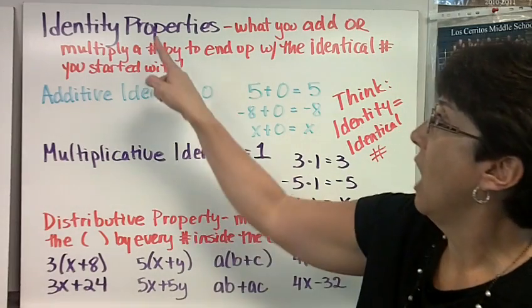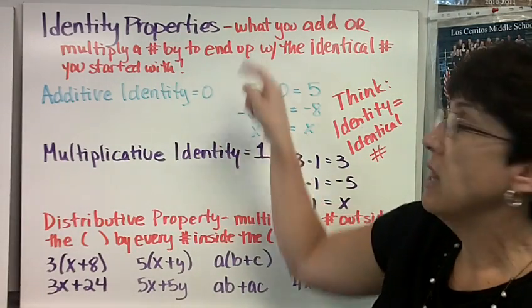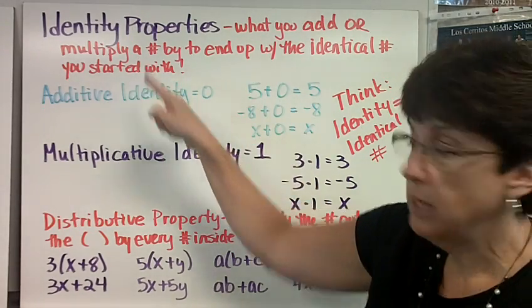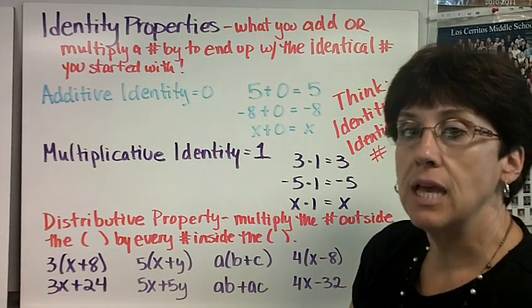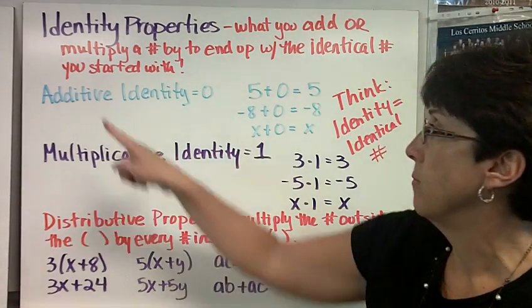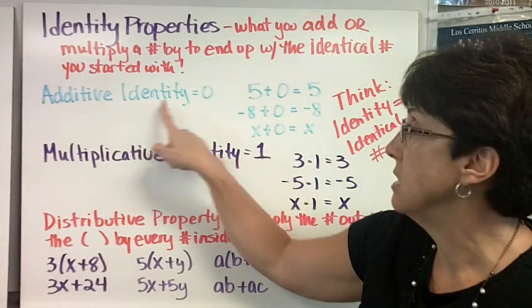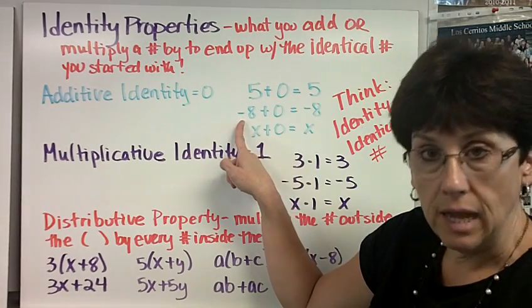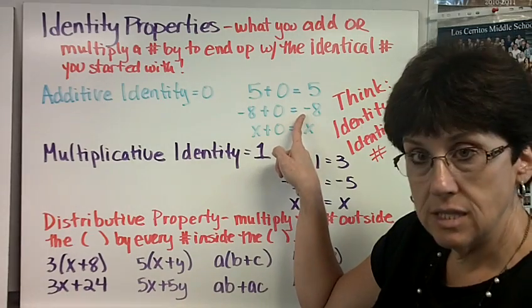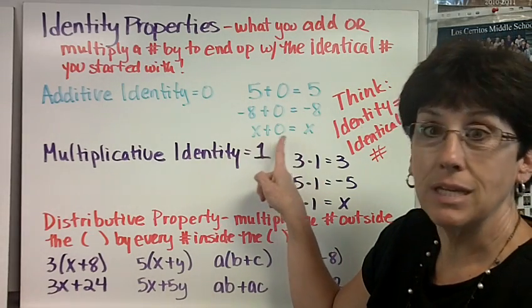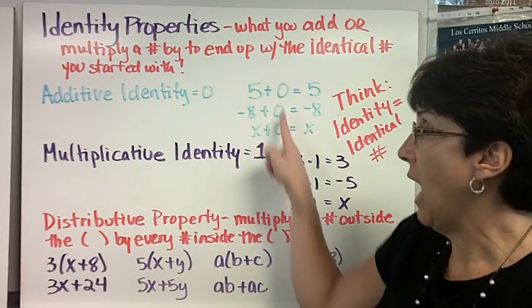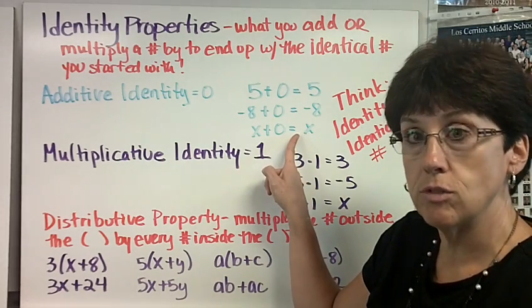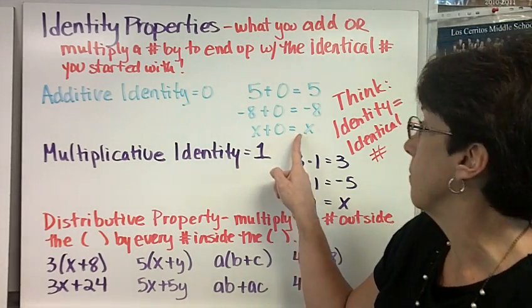Here are some more properties. Identity properties. You need to think about what you add or multiply a number by to end up with the identical number you started with. The additive identity is 0 because 5 plus 0 is 5, negative 8 plus 0 is negative 8, x plus 0 is x. I add 0 and I get the identical number I started with.